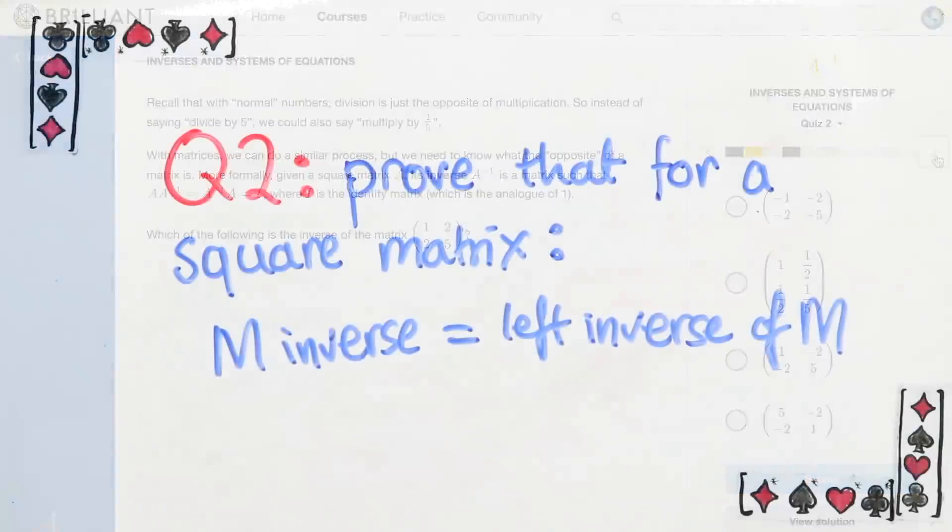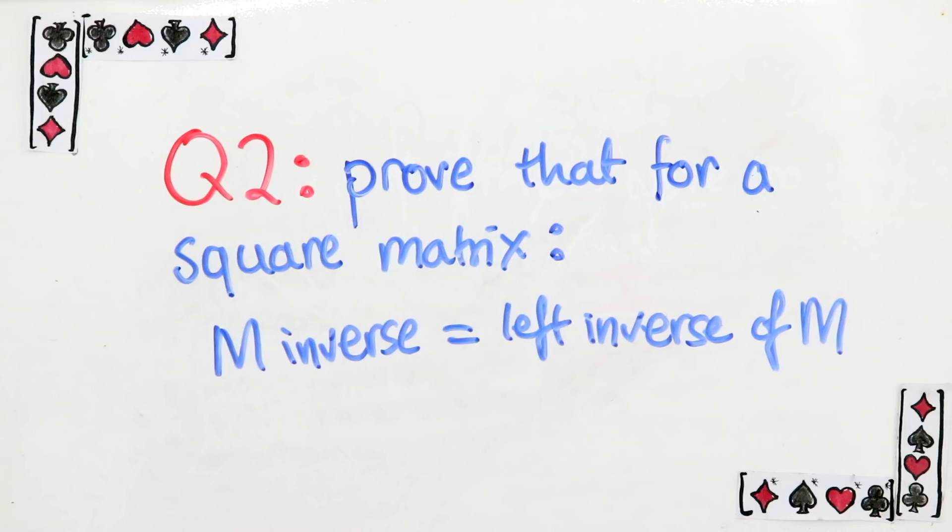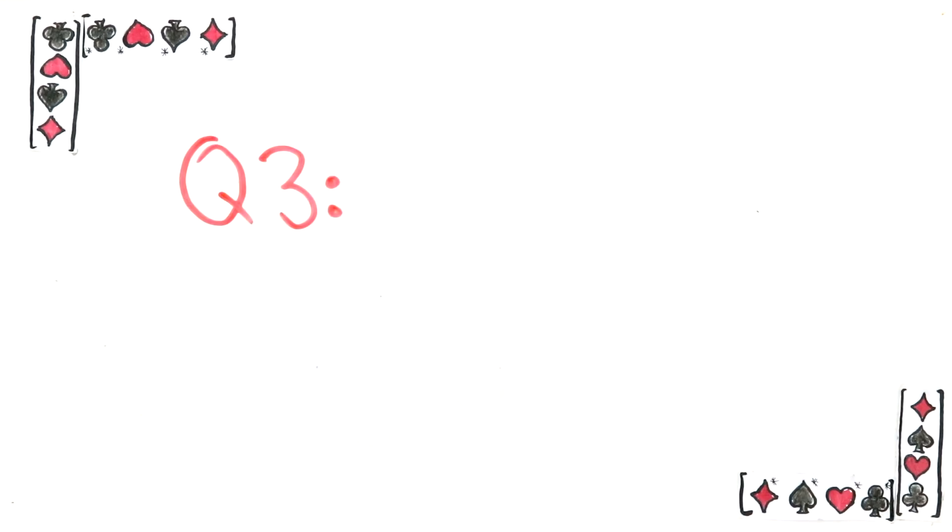Question 2. Prove that for a square matrix, M inverse is equal to the left inverse of M. There's lots of hints in the description for this, but first I want you to try question 3 because it's a very illustrative example.